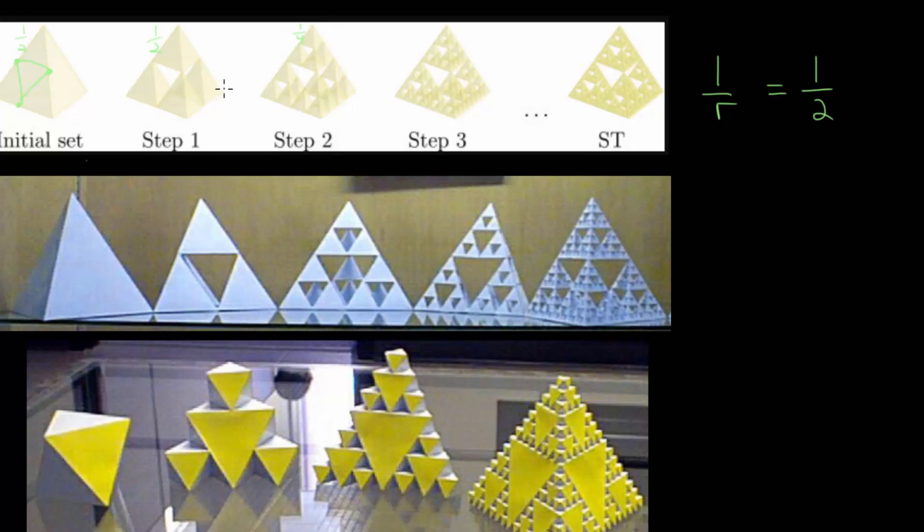And notice that the number of pieces we get going from one step to the next is 4, since we end up with three of the pyramids on the bottom and one on top, which means that our n value is 4. And we can set up our equation, r to the d is equal to n. We know that r is equal to 2, n is 4, so we have that 2 raised to the dimension of this Sierpinski tetrahedron is equal to 4, and we know that 2 squared is equal to 4. 2 times 2 is 4, meaning that our dimension in this case is actually 2.